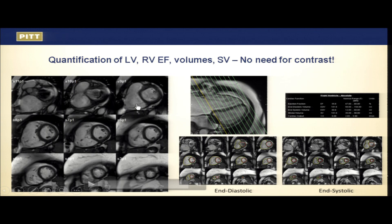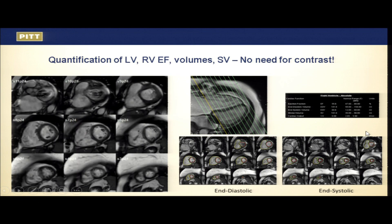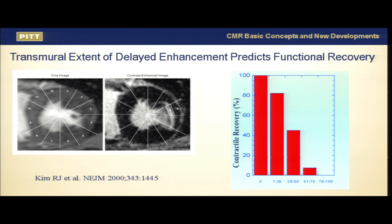We can quantitate this ventricular remodeling and the severity of tricuspid regurgitation. Regarding myocardial delayed enhancement — going back to the question Dr. Zogby raised — the extent of transmural enhancement will predict functional recovery after coronary revascularization.